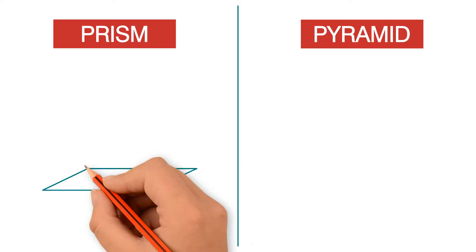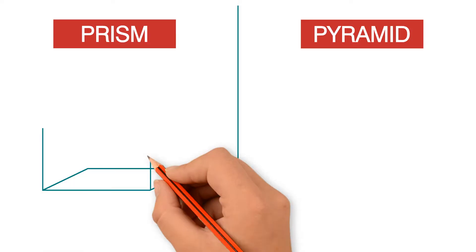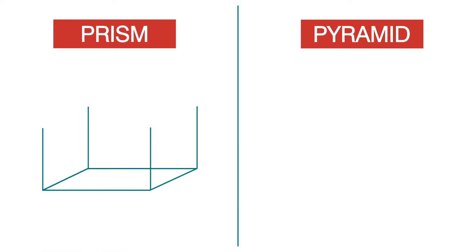Let's take a look at the prism. A prism is a polyhedron that has two congruent polygons as bases. The lateral faces of a prism are rectangles. In this prism, we have four lateral faces.